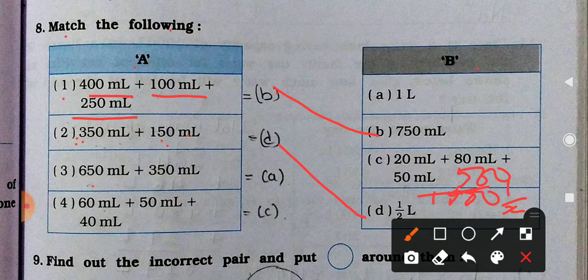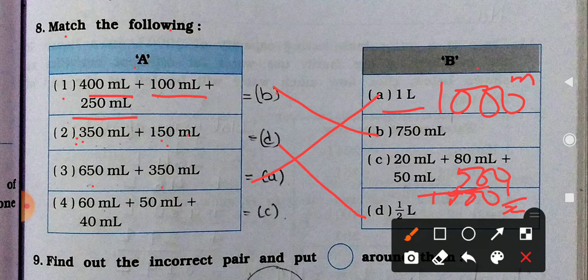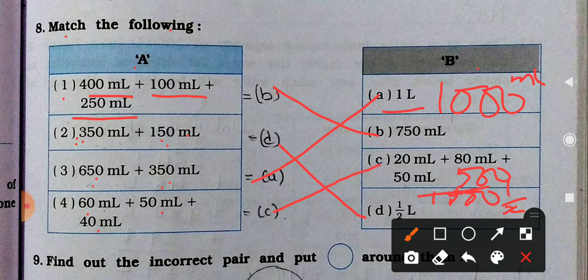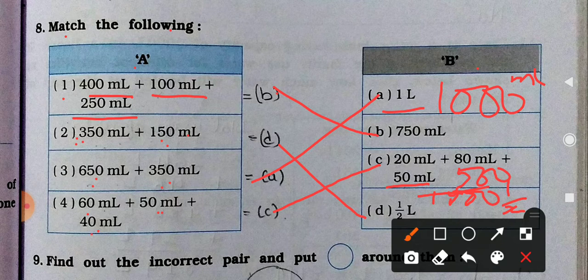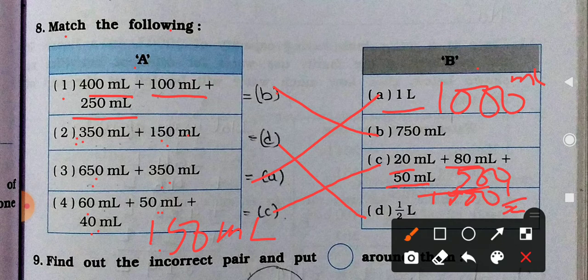Third number: 650 plus 350 milliliter. 1 liter, 1000. It will come 1000 milliliter. 1 liter means 1000 milliliter. 60 milliliter, 50 milliliter and 40. How it will come? 20 milliliter, 80 milliliter and 50 milliliter is equal. 60 plus 50, 110, and 40, 150 milliliter. Add this one: 20 plus 80, 100 and plus 50. So here also 150 milliliter. So both are equal.